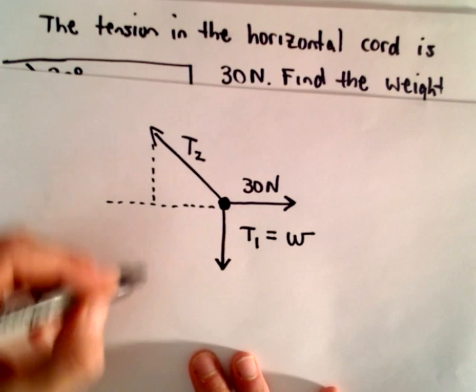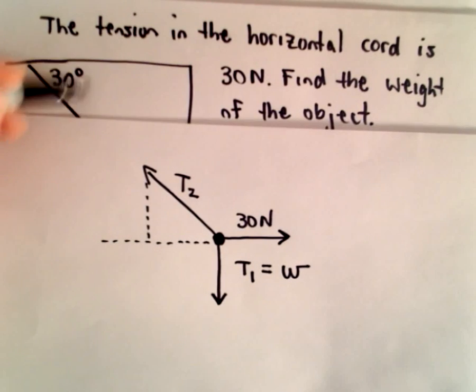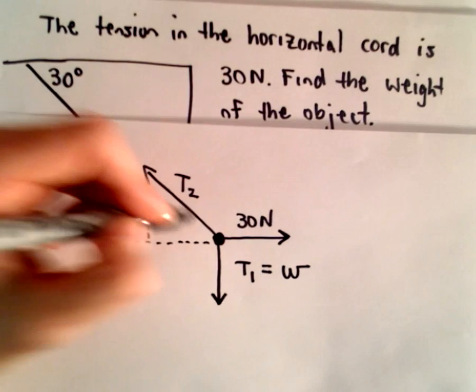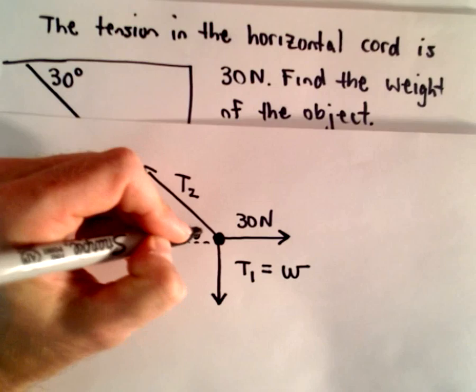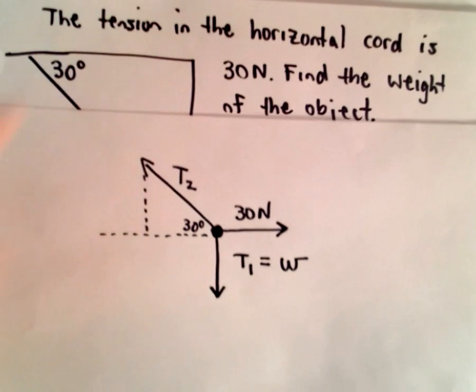Alrighty, so to do this we can just use a little bit of basic trigonometry. This angle is 30 degrees, so we can conclude that this is also 30 degrees, just basic geometry there.